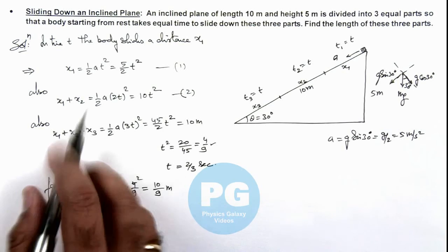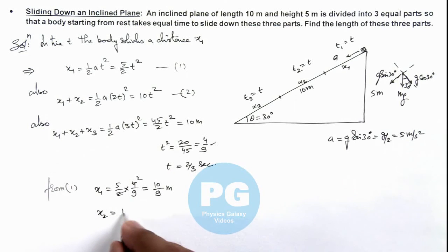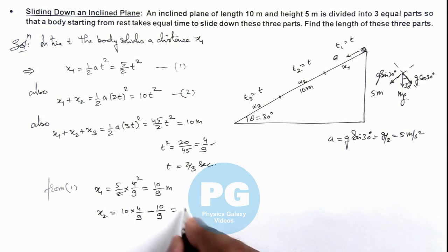x2 I can write as 10 t squared, this 10 multiplied by 4 by 9 minus x1 which is 10 by 9. So here we can see this is 40 by 9 minus 10 by 9, this is 30 by 9, so the result is 10 by 3 meters.